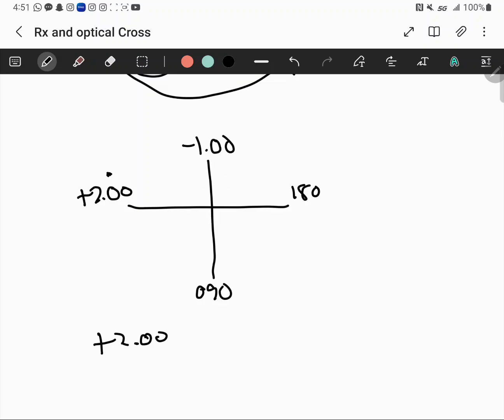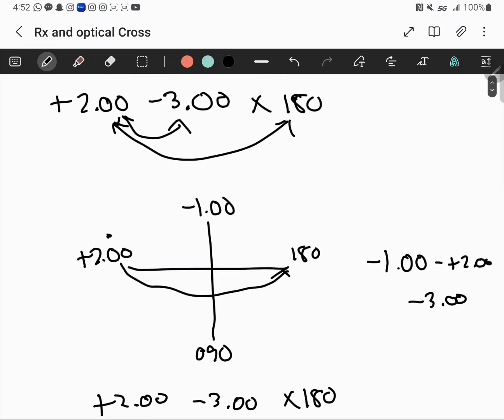We also pick the axis it's on and put axis 180. Then find how far apart these are from each other. Take the opposite meridian, negative 1, minus whatever our number is, plus 2. You get negative 3, plus 2, negative 3, axis 180 - same as what we did up there.